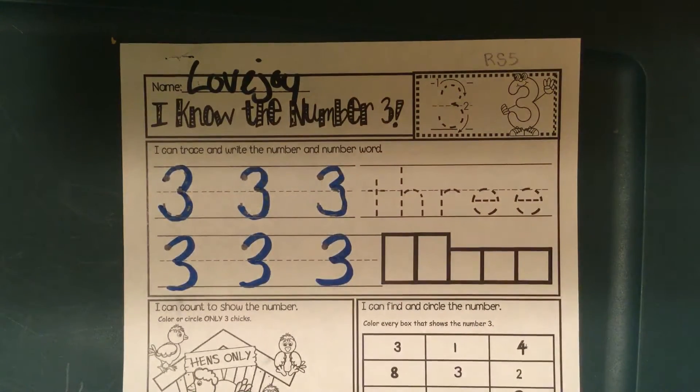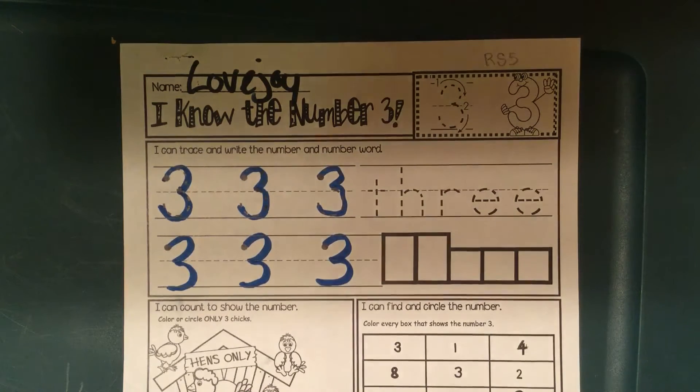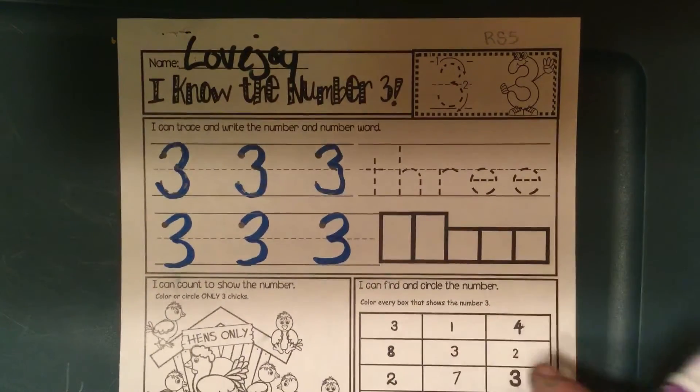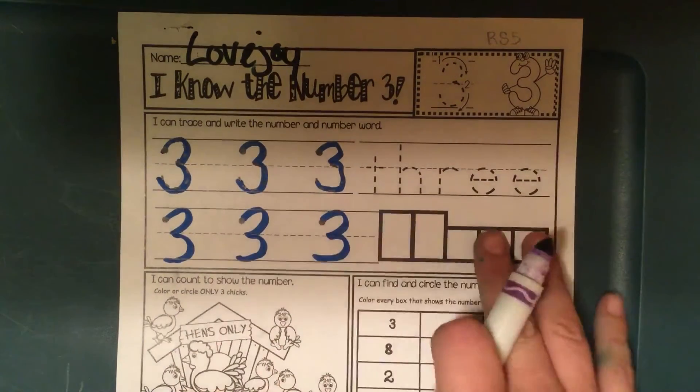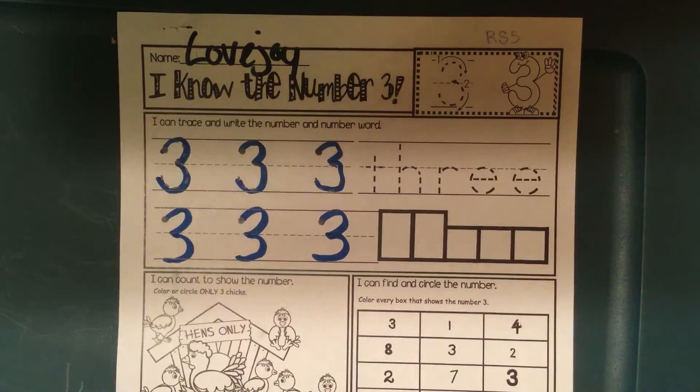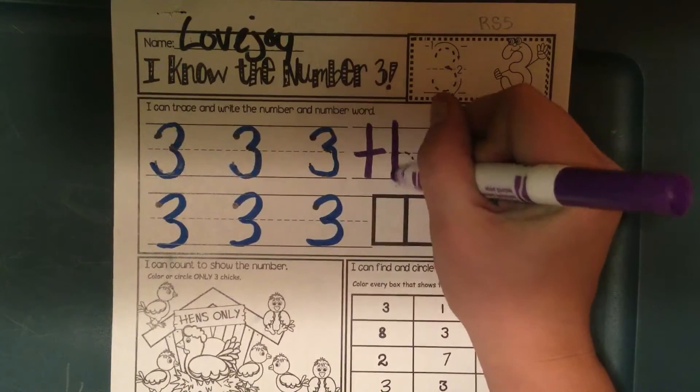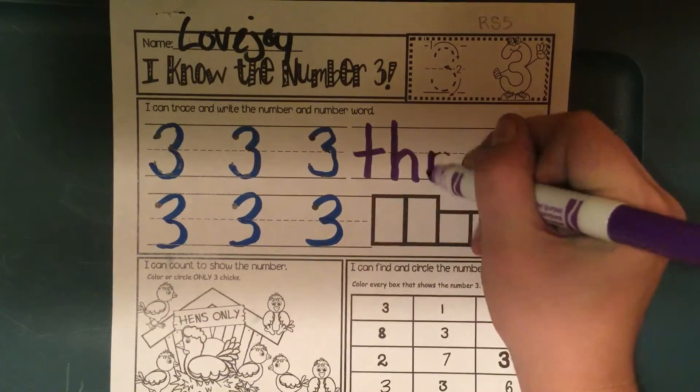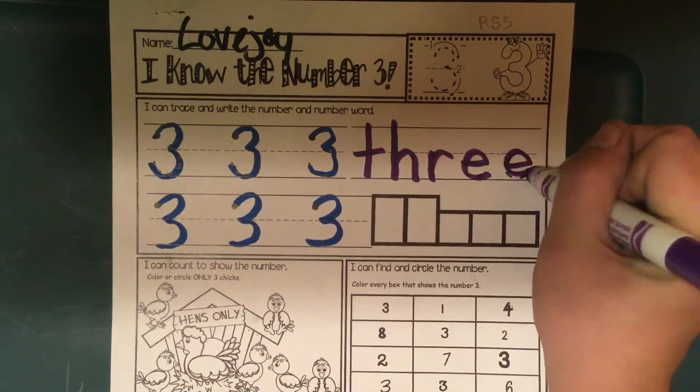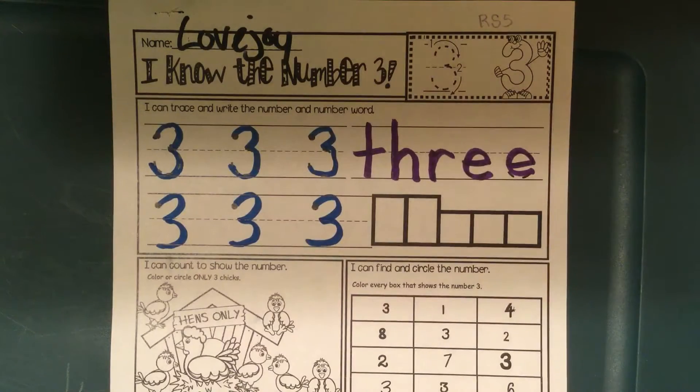And then, I'm going to come over and write the number word. We've talked about different ways to show the number 3 in our number of the day video. Now we're going to show how we can utilize those different ones. We showed the numeral. Now we're going to do the number word. So the number word is T-H-R-E-E. And that spells 3.